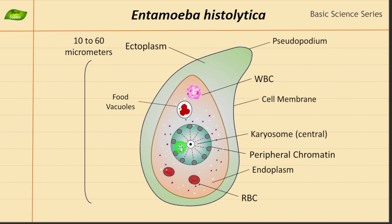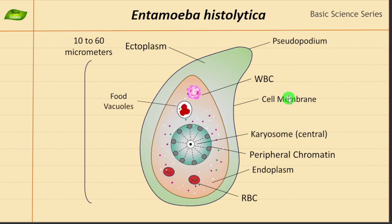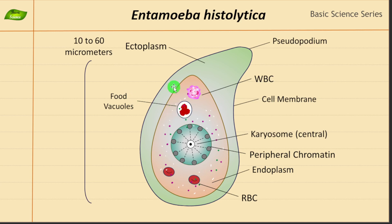The important structures that are unique to Entamoeba histolytica — we have discussed all of them. To revise: we started from the outermost layer, which is the plasma membrane. Inside that we have cytoplasm, differentiated into ectoplasm and endoplasm. Ectoplasm is the outer region and endoplasm is more like the central region. Then we have the nucleus containing the karyosome and peripheral chromatin. RBCs are also present, as are food vacuoles. Because of the pseudopodium, it can move from one place to another.